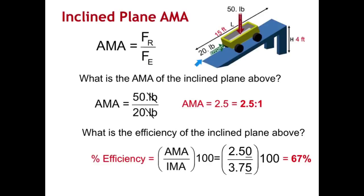So to solve this problem here, we've already found IMA using the distances. Now we're ready to use the forces to find my AMA. Notice my force resistance is this cart here, and it's 50 point pounds. The decimal at the end tells me that that zero is significant, so I have 2 significant figures here.